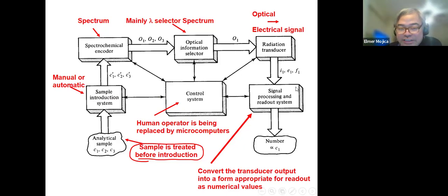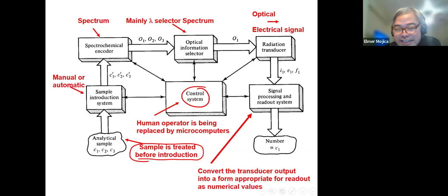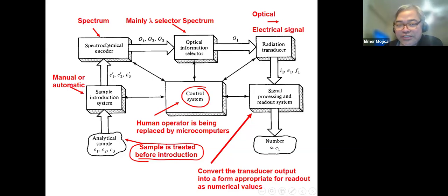Once you have what we call the system and put it there, you can get the measurement — we call this the spectrochemical encoder. Everything is controlled by the system, and usually the control system is operated by you. You introduce the sample and you get the signal.